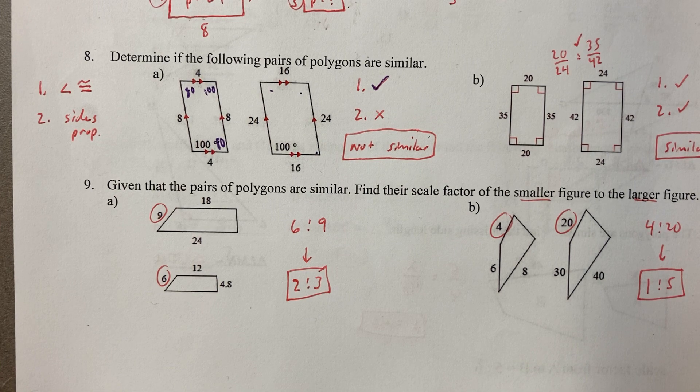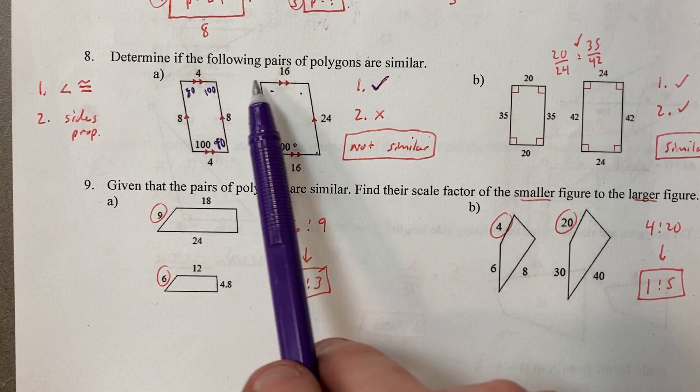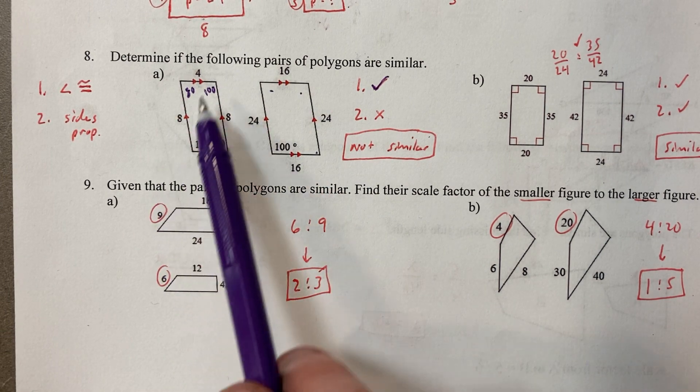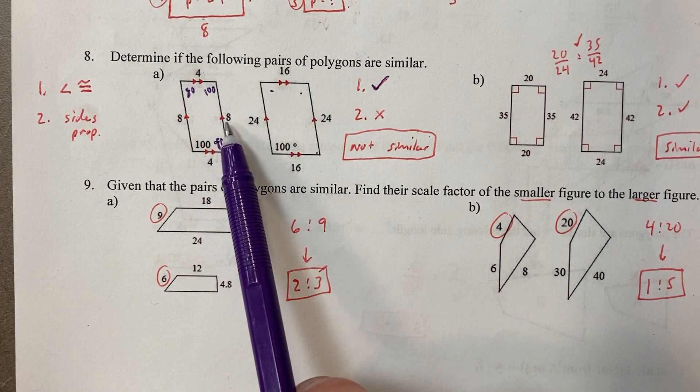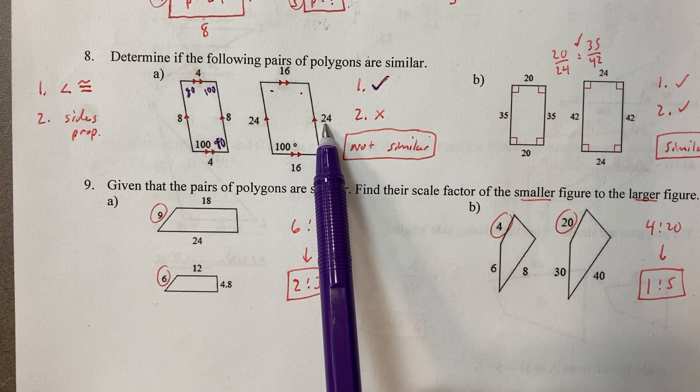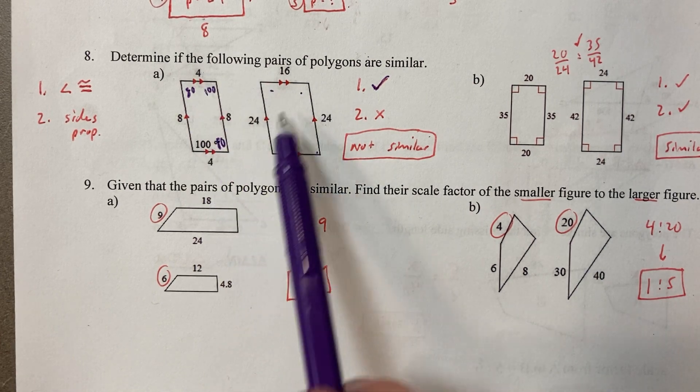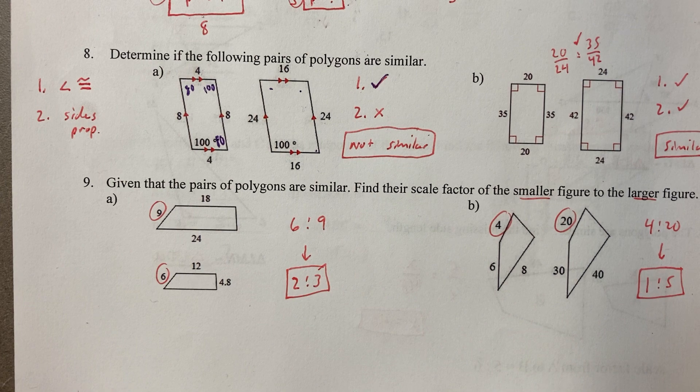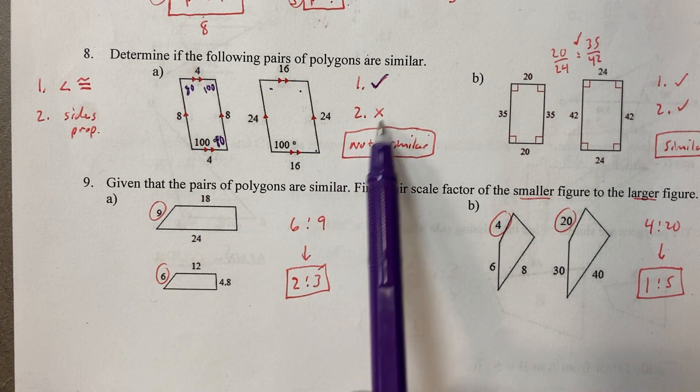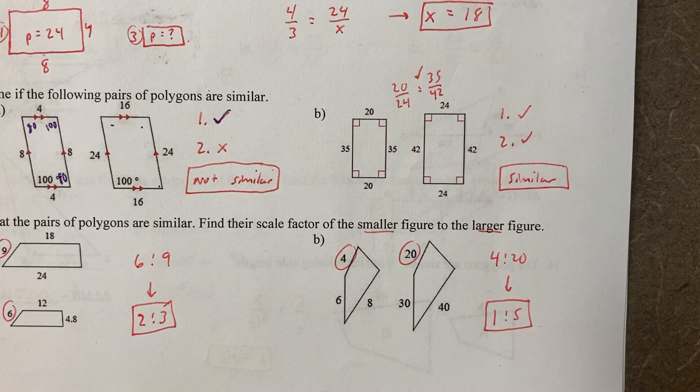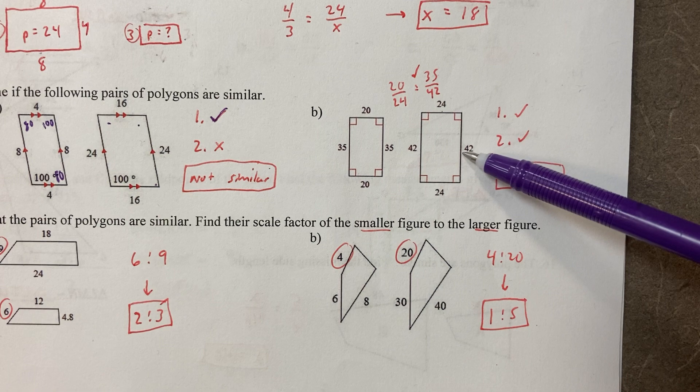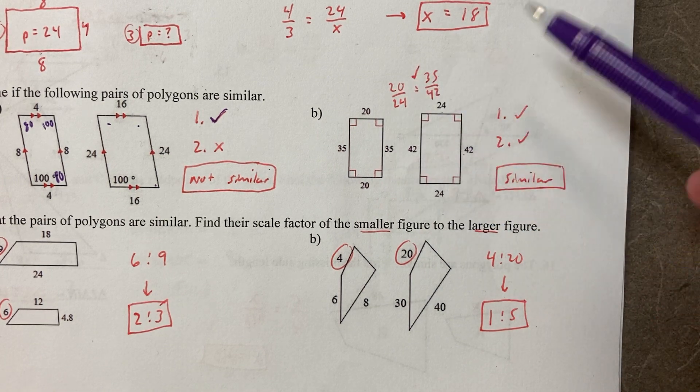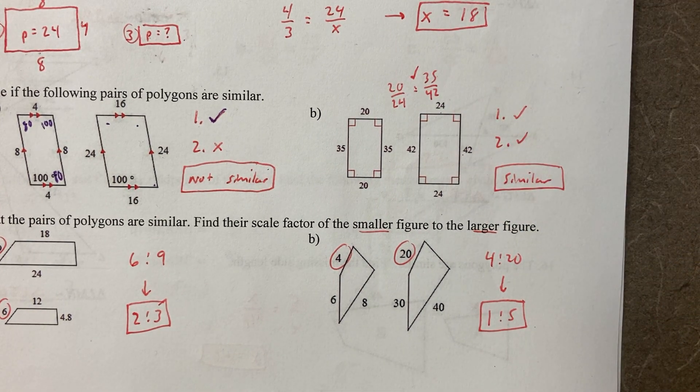Are the sides proportional? You could do four to 16, and that way it'd be four times four is 16. Eight times four is not 24. These are not proportional. It doesn't meet the second criteria. This one does. 20 to 24 is the same as 35 to 42. You can easily check that proportion by just cross multiplying.